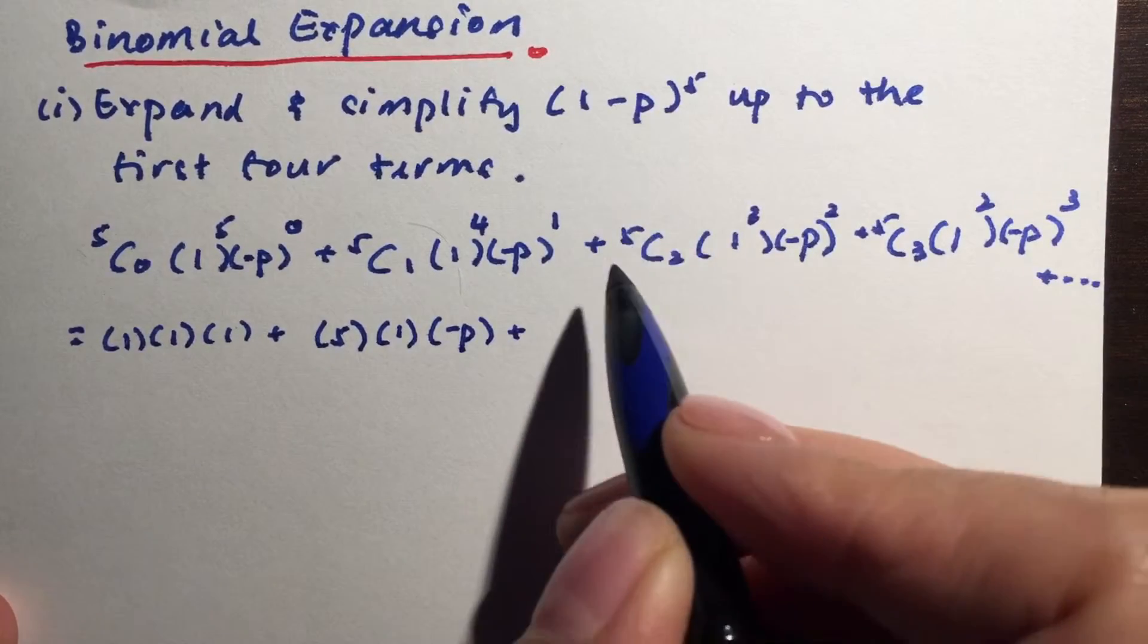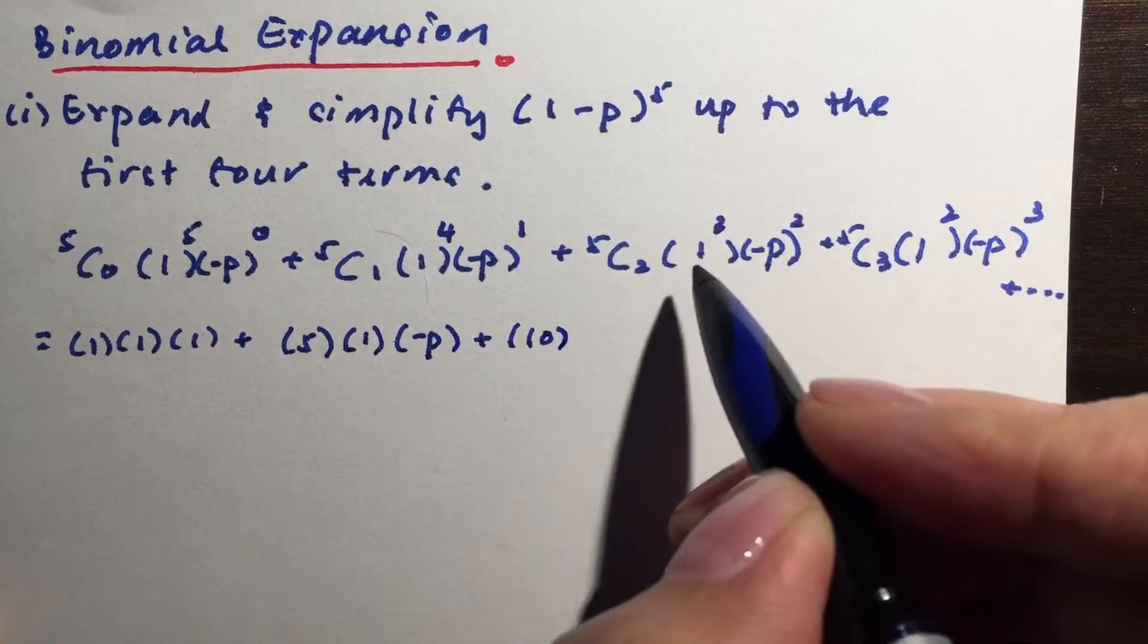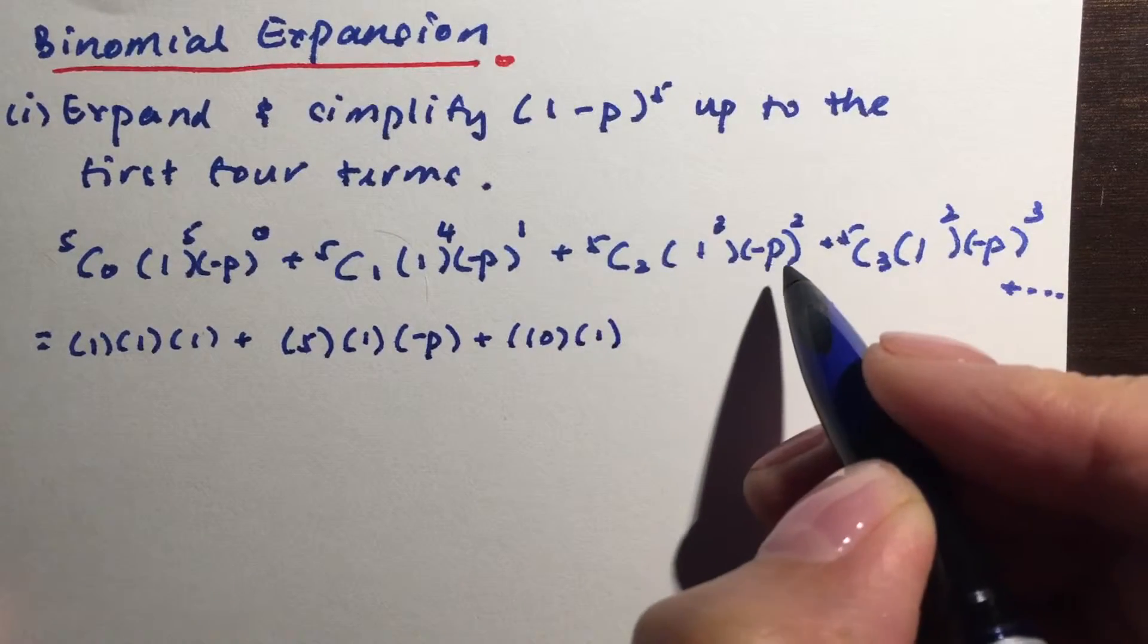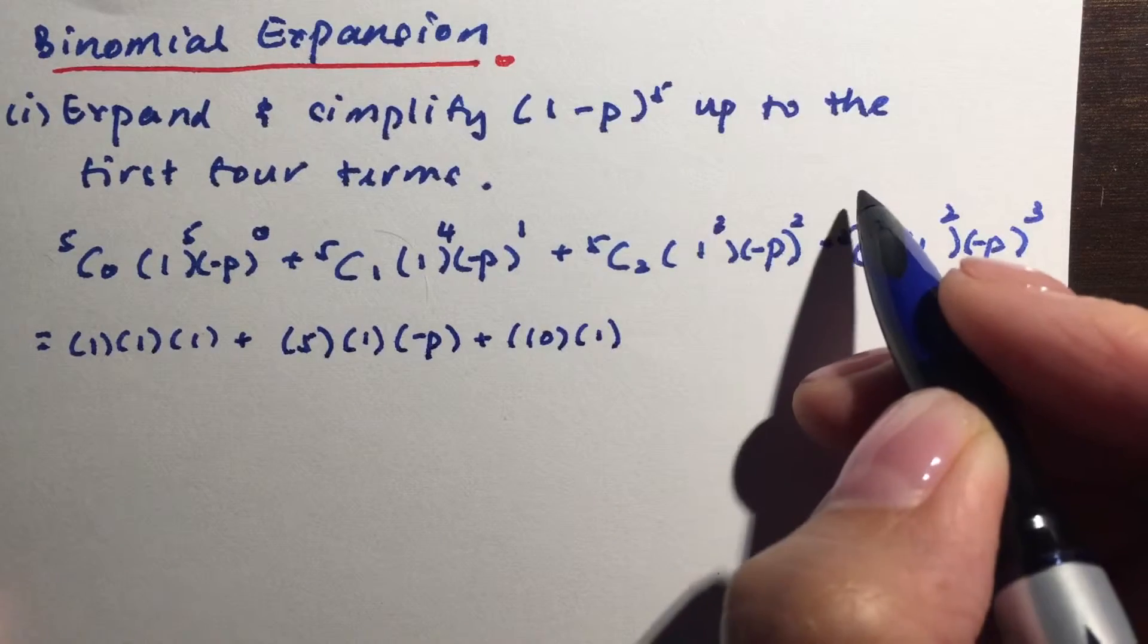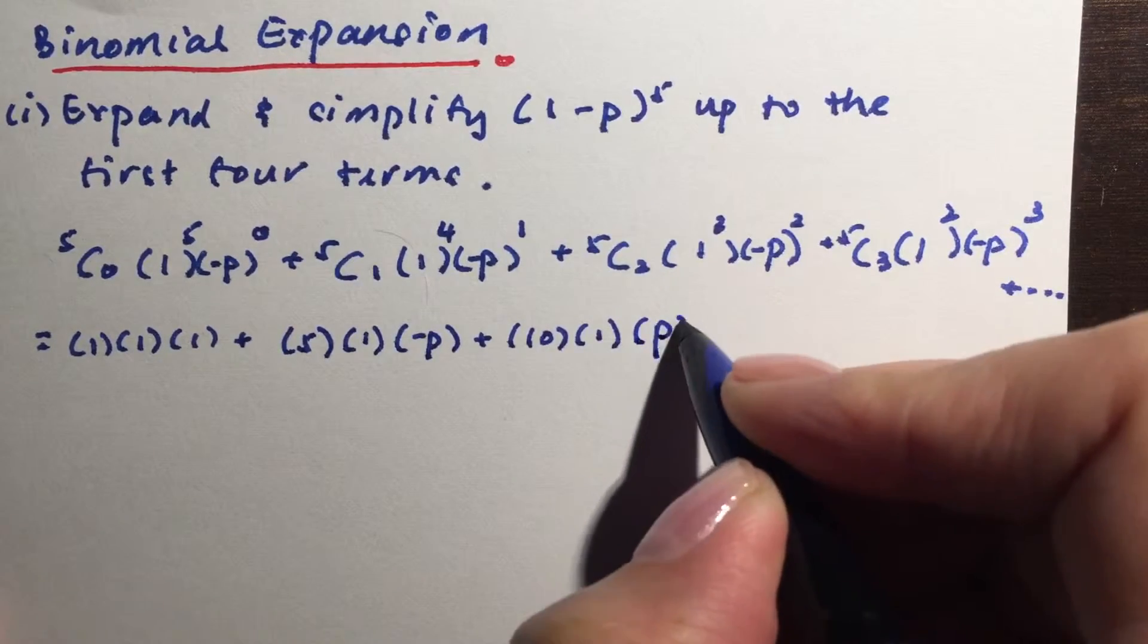And you can press your calculator, 5 choose 2, this will give you 10. 1 to the power of 3 is again just 1. Now be careful here because this is -P with a square. So in this case here, what we will have is that it becomes a positive P squared.